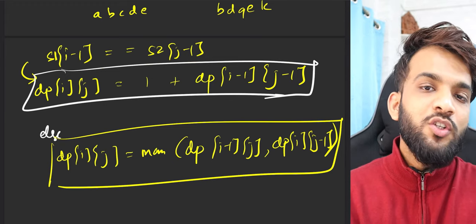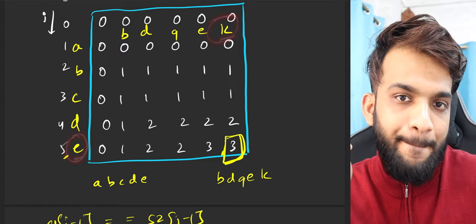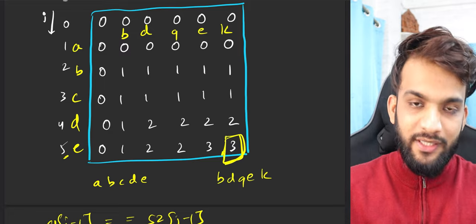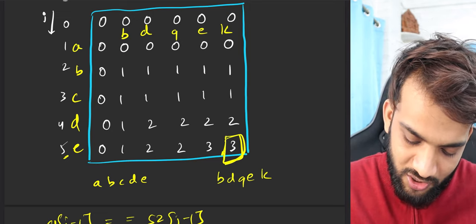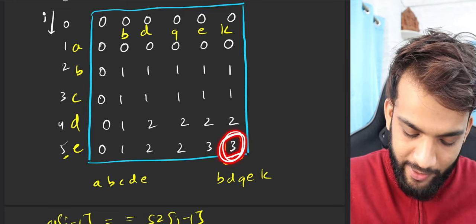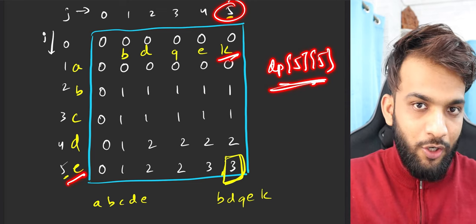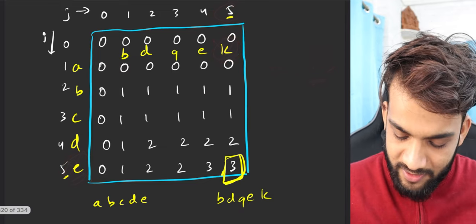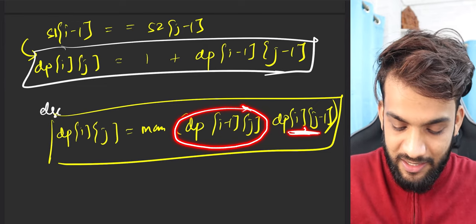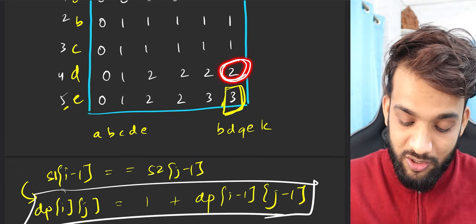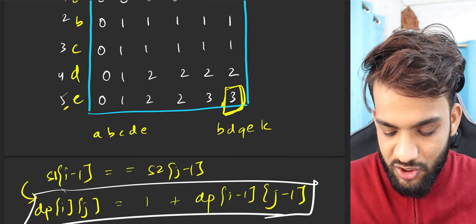Now let's backtrack. We have dp[5][5] = 3. Does 'e' (from s1) match 'k' (from s2)? No. So when the tabulation runs, trying to fill dp[5][5]: since k and e do not match, where does this 3 come from? From the max of either dp[i-1][j] or dp[i][j-1]. The 3 came from dp[4][5] (the previous row), so we move there.